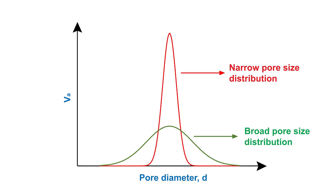In agriculture we strive for a broad pore size distribution. Large pores allow for drainage of water down into the subsoil and underlying bedrock. Medium and small pores hold water against the pull of gravity yet allow plants to extract that stored water for their needs. Very small pores hold water that is not available to plants but keeps many microorganisms functioning.